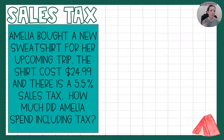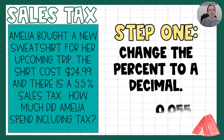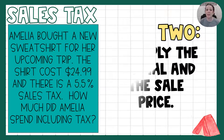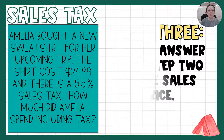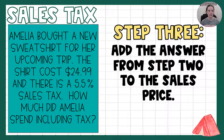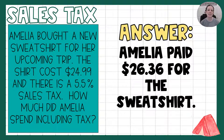Here we have Amelia. She bought a new sweatshirt for $24.99, and there is a 5.5% sales tax. How much did Amelia spend including tax? This problem asks for the total, not just the tax. Step one: change the percent to a decimal — 5.5% is 0.055. Step two: multiply 0.055 by $24.99 to get the sales tax, which is $1.37. Step three: add that to the sale price — $1.37 plus $24.99 means Amelia paid $26.36 for the sweatshirt.